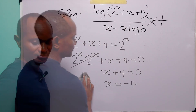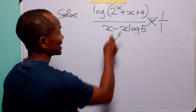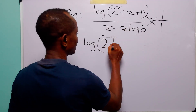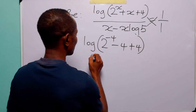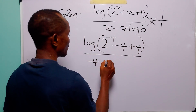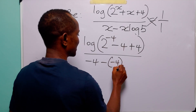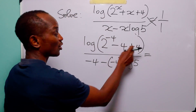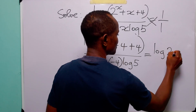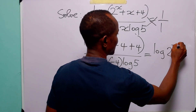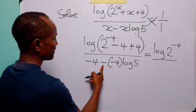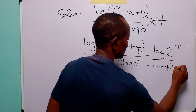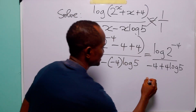Now let us check our answer by substituting minus 4 for x into the equation. In the numerator, minus 4 plus 4 equals 0, so we are left with log 2 to the power minus 4 in the numerator. In the denominator, minus minus is plus, so the denominator is minus 4 plus 4 log 5.